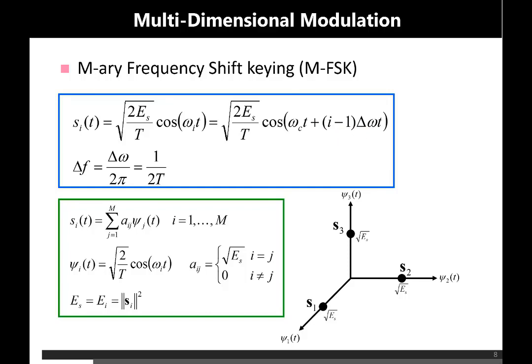The frequency deviation delta_omega can be converted to delta_f in hertz by dividing by 2π. We will show that delta_f must equal 1/(2T) — this is the condition for orthogonality in FSK. The separation between any two adjacent frequencies, for example f1 and f2 in binary FSK, must equal 1/(2T). From this condition, the number of basis functions required for transmission also equals M, which is why FSK belongs to the category of multi-dimensional modulation — requiring more than two basis functions when M is greater than 2.